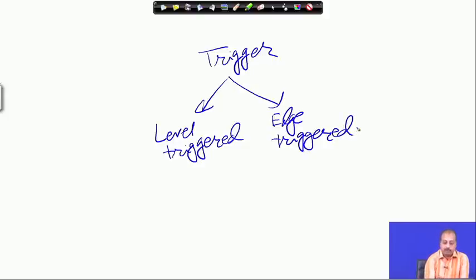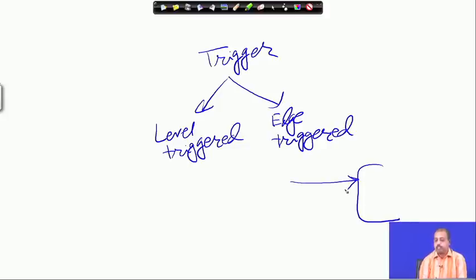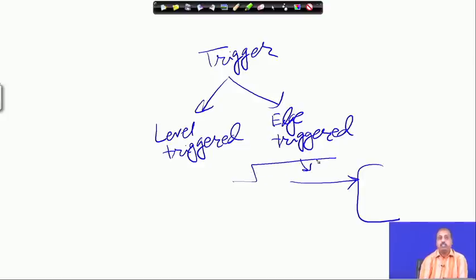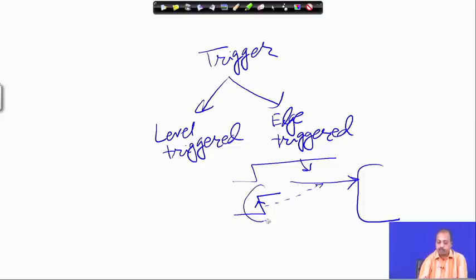For a level-triggered interrupt, the high value will be sensed by the processor. For edge-triggered, this rising edge will be sensed as the interrupting point. For this rising edge sensing to work, we should be able to latch the occurrence of this particular event.